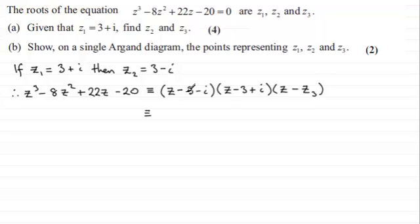Okay, so let's just expand these two brackets. So if we do z times each of the terms here, we get z times z which is z squared, and then z times minus 3 is minus 3z, and z times plus i is plus iz.